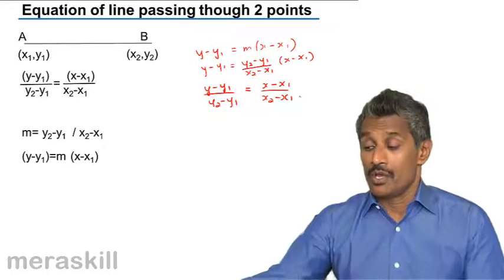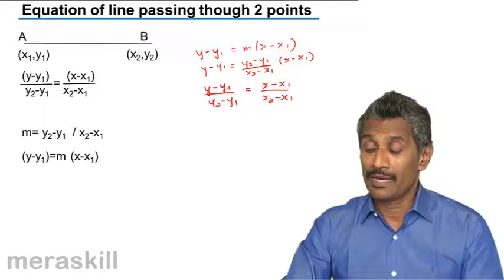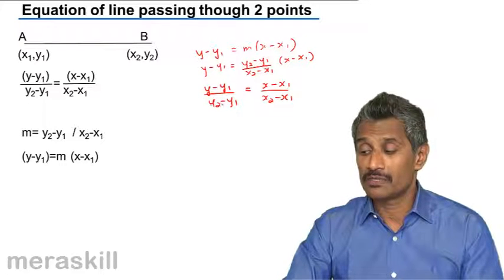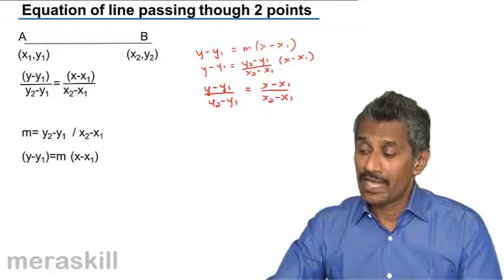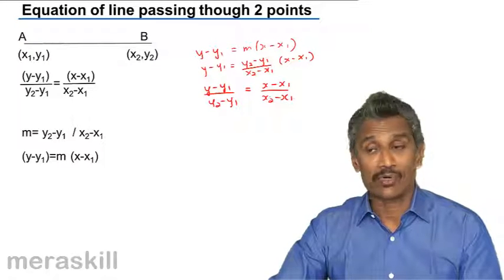So suppose we know the coordinates of any two points of the line, y minus the y-coordinate of the first one upon difference in the y-coordinates, x minus x-coordinate of the first one upon the difference in x-coordinates.